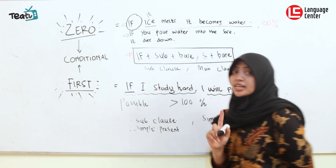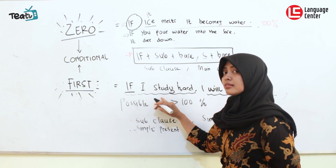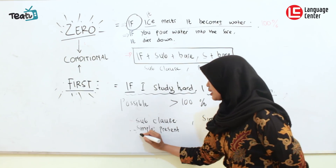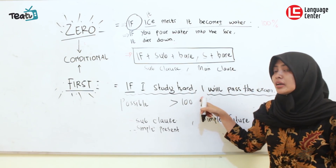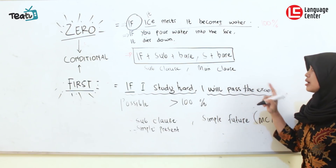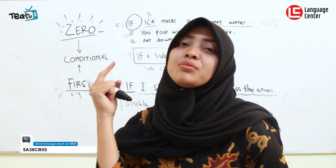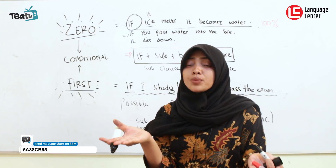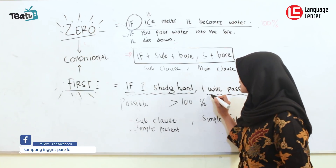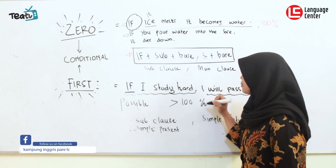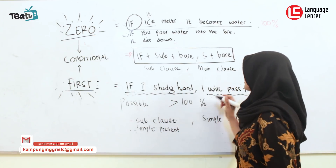So to summarize the first condition: If + subject + verb (present form), comma, subject + will + verb (base). If we remember the simple future formula, instead of 'will' we can also use 'shall'. It's also possible to use other modals — we can use 'might' or we can use 'could'.